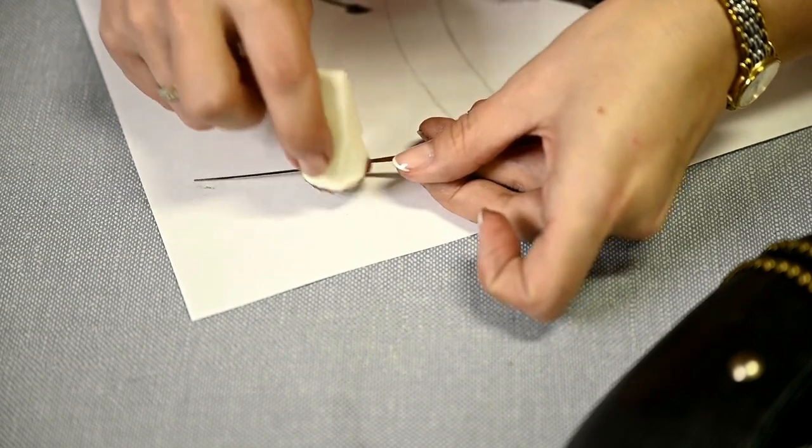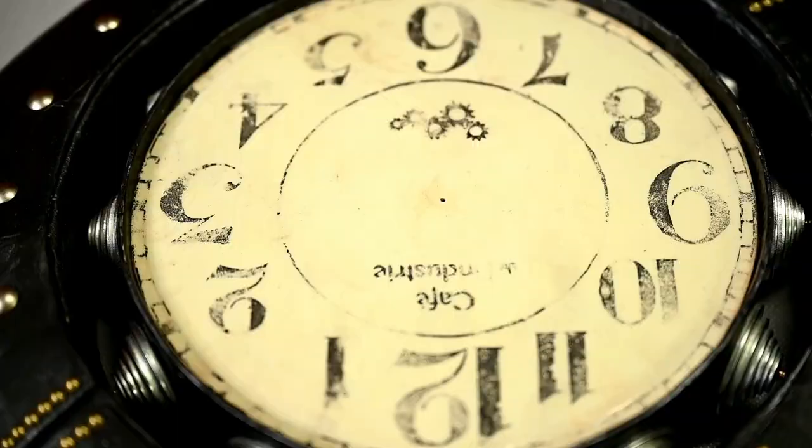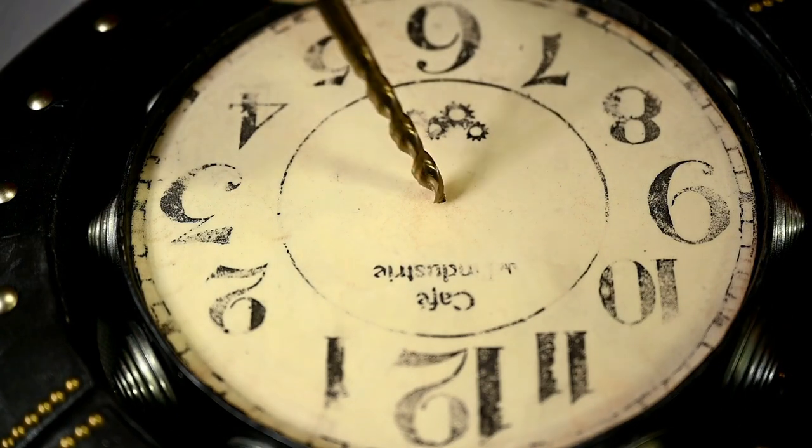I aged the arrows a little with black and brown acrylic using a sponge.